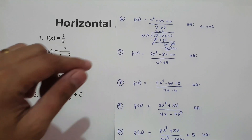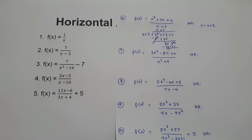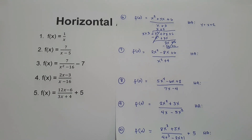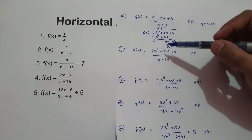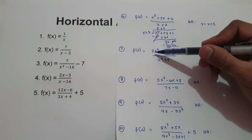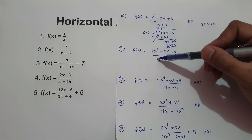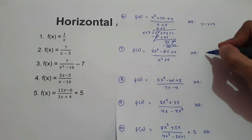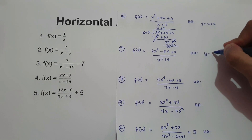What about number seven? f of x equals 2x squared minus 8x plus 6 all over x squared plus 4. As you can see, the degree of the numerator and the degree of the denominator are equal. So our horizontal asymptote is the ratio of the leading coefficients: the numerator is 2, the denominator is 1. We simply divide 2 over 1 — our horizontal asymptote is 2.